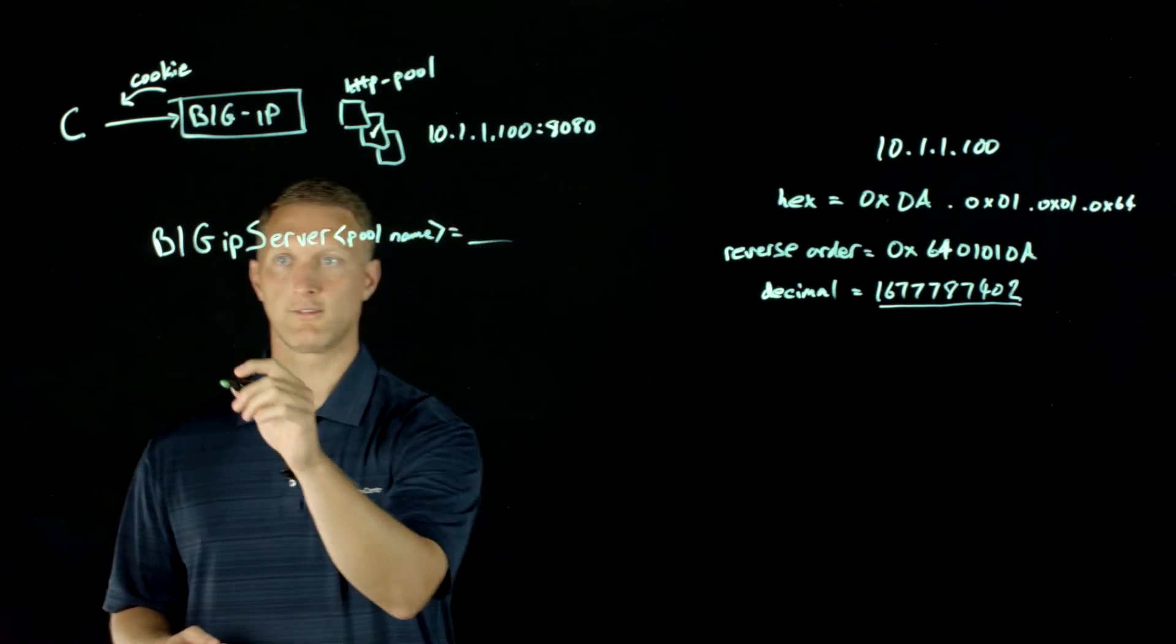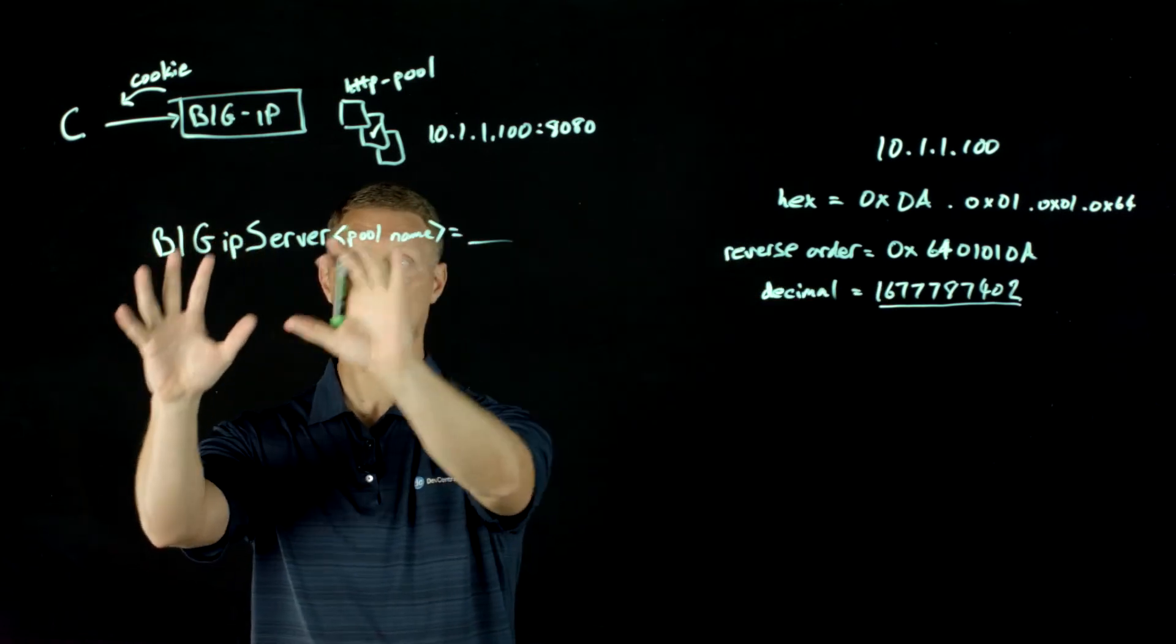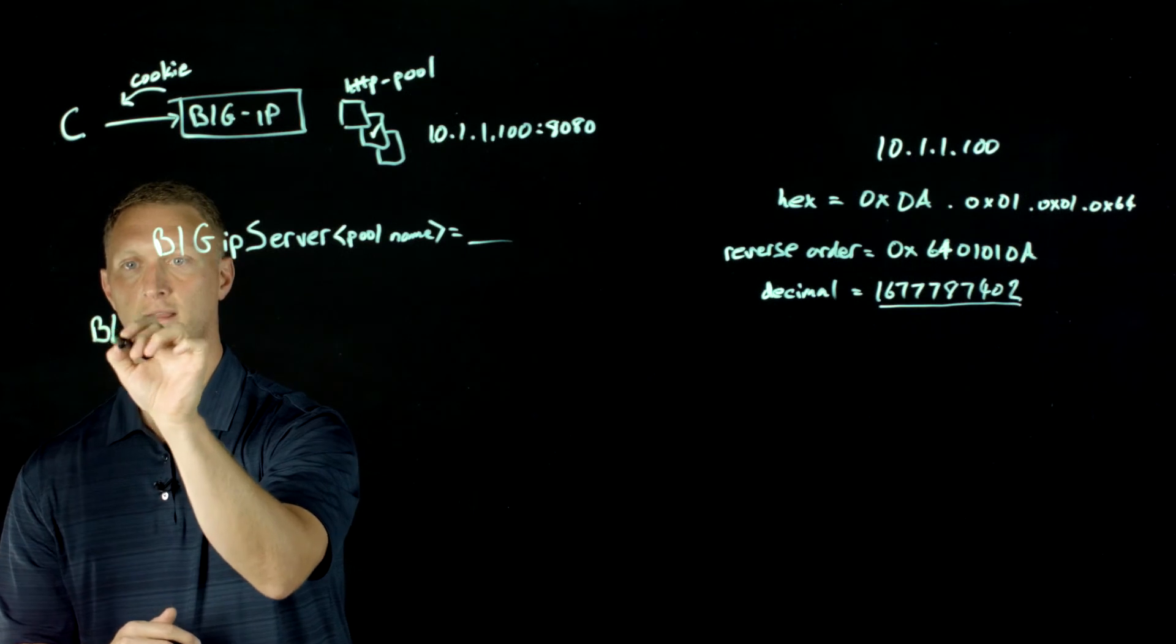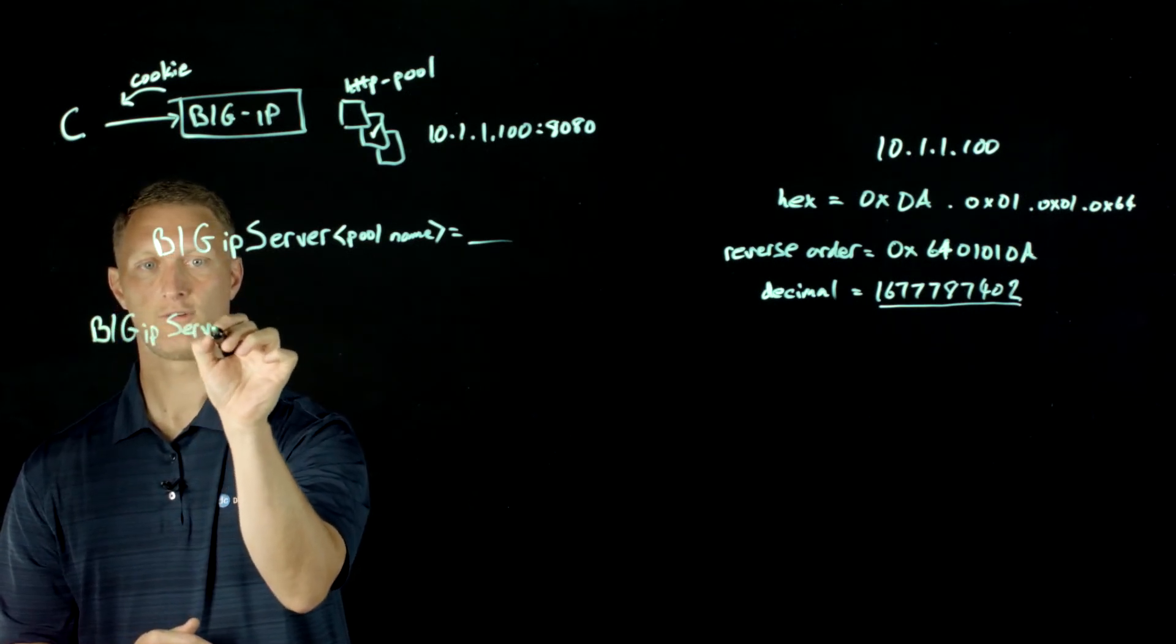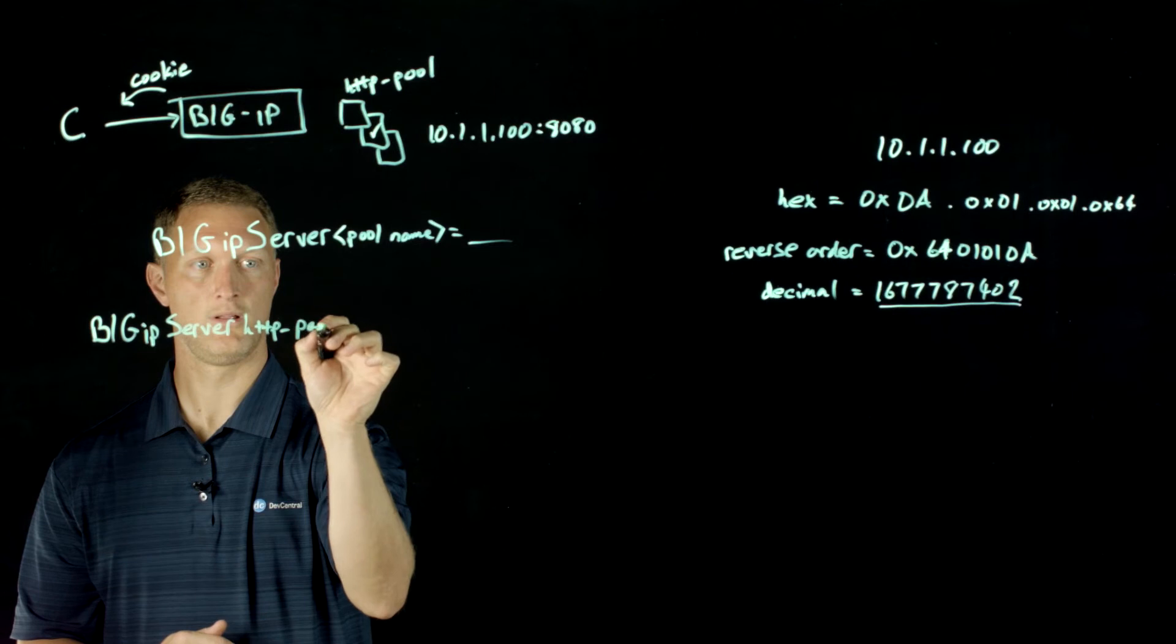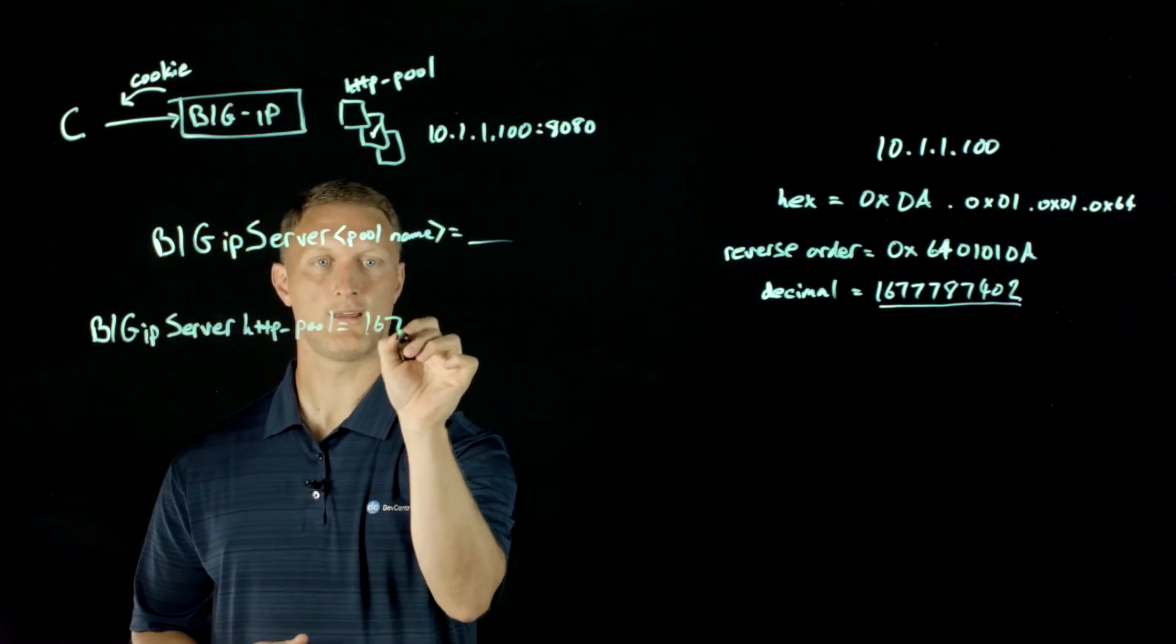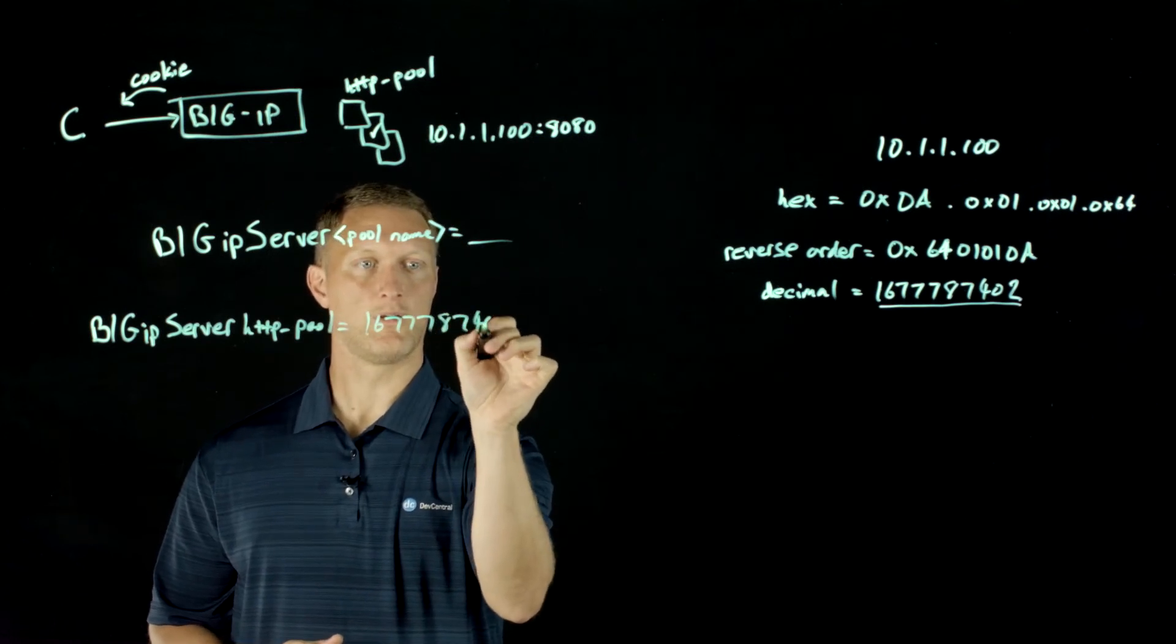If we're going to take that and put it into now our cookie, we would say our cookie would now be BIGipServer.HTTP_pool equals. Now this huge number 1677778402.